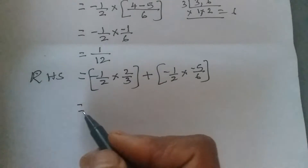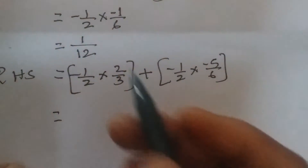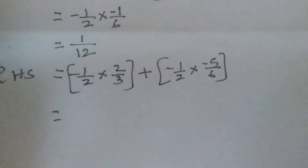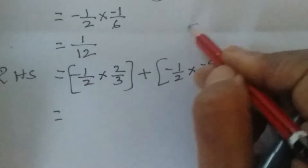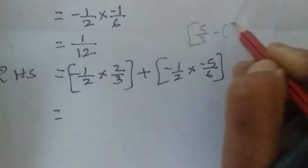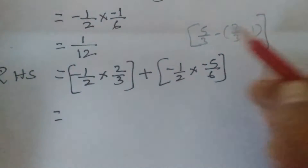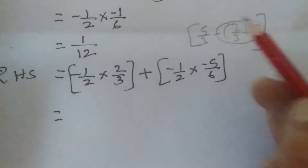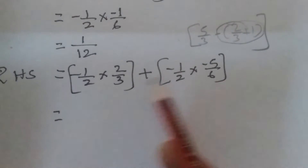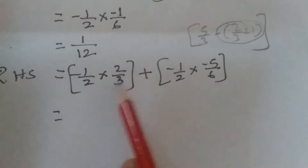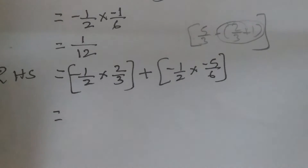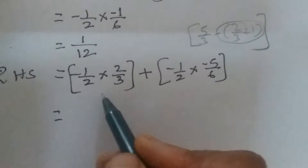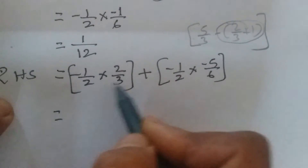Now let us check the right-hand side. The RHS has two separate brackets. Note: if one bracket is inside another, we solve the innermost first. But here the two brackets are separate, so we can simplify both at the same time. The first bracket is −1/2 × 2/3.